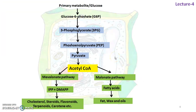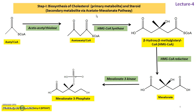This is the schematic presentation or flowchart — please pay your attention. Primary metabolites: glucose undergoes metabolism via glucose 6-phosphate to yield 3-phosphoglycerate, then phosphoenolpyruvate, then pyruvate — this pyruvate becomes acetyl-CoA. To this acetyl-CoA, one molecule of mevalonic acid and one molecule of mevalonate are attached through various enzymatic reactions, giving rise to respective types of primary and secondary metabolites. Step 1: biosynthesis of cholesterol (primary metabolite) and steroids (secondary metabolites) via the acetate mevalonate pathway.